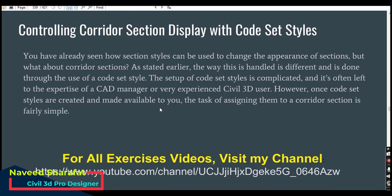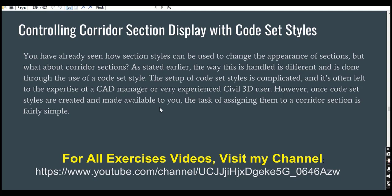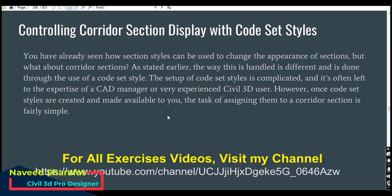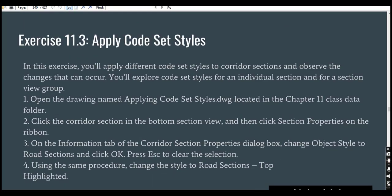Controlling coordinate corridor section display with code set style — we have already seen how section styles can be used to change the appearance of sections, but what about corridor sections? As stated earlier, the way this is handled is done through the use of corset style. The setup of corset style is complicated and it's often left to the expertise of a CAD manager or very experienced Civil 3D user. However, once corset styles are created and made available to you, the task of assigning them to a corridor section is fairly simple.